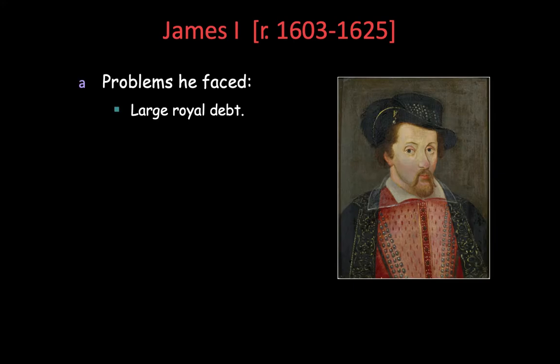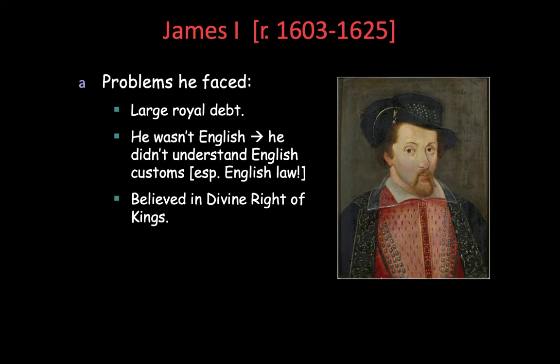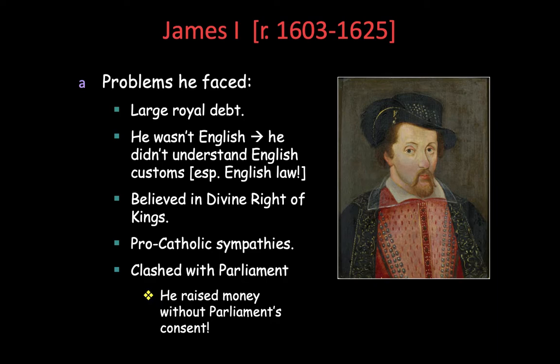James I believes in the divine right of kings and faces several other problems. He believes in divine right, meaning he answers to God, not to Parliament. Elizabeth had worked with Parliament and they seemed to have a good relationship. But James has several problems: debt, he doesn't quite understand English customs, and he's more pro-Catholic than the people wanted him to be — therefore he clashes with Parliament.